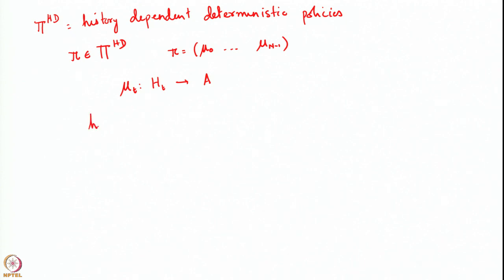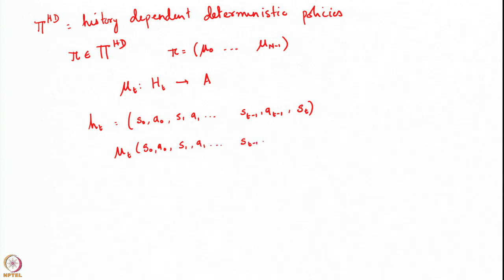The history at time t, denoted h_t, comprised of the sequence of states and actions taken so far: s_0, a_0, s_1, a_1, all the way till s_{t-1}, a_{t-1}, and also the state at time t. So this is the entire history of the problem up until time t. The history dependent deterministic decision rule maps this entire vector to an action a_t, where a_t belongs to A(s_t), the set of actions available at time t.